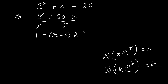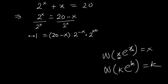Now I want to make the base and the exponent here equal in order to apply the Lambert W function. We need to make what is in the exponent the same as what is in front. So we multiply both sides by 2^20, giving us 2^20 on this side.